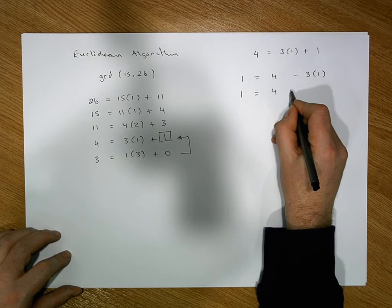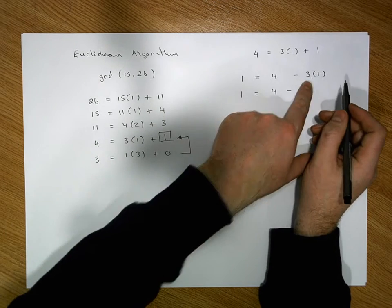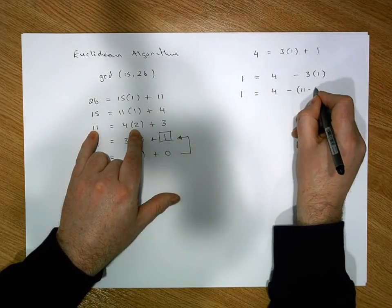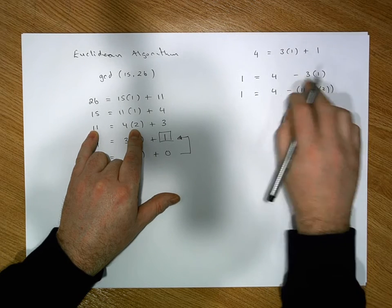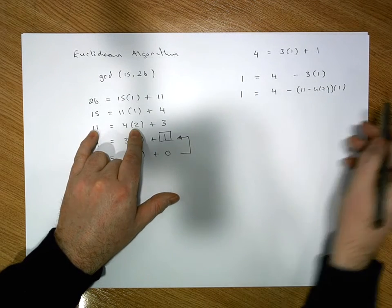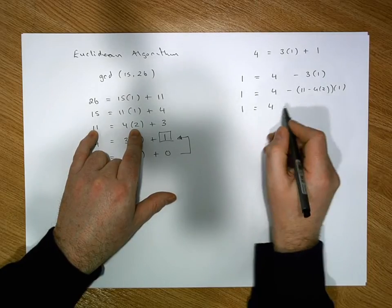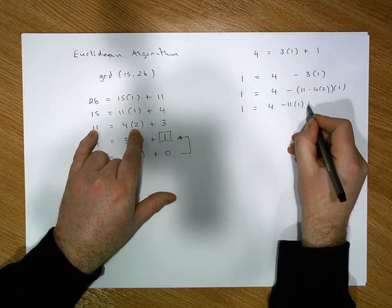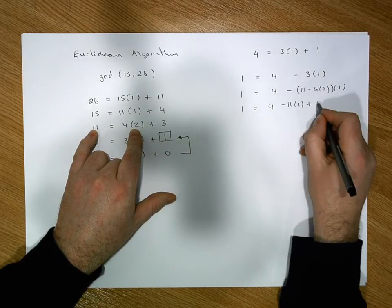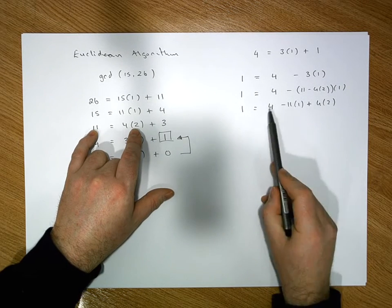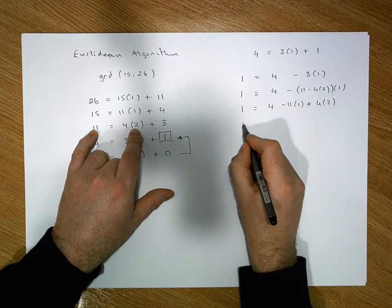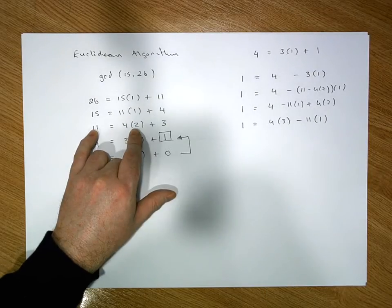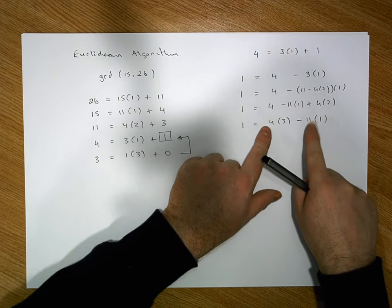We back substitute for r3: r3 is 11 minus 4 times 2, so minus 11 minus 4 times 2, times 1. Let's multiply out the brackets — 1 is equal to 4 minus 11 times 1 gives us minus 11 times 1; minus times minus gives us a plus, so 4 times 2 times 1 gives us 4 times 2. Now, how many 4s have we got? We have 3 of them, so 1 must equal 4 times 3 minus 11 times 1.